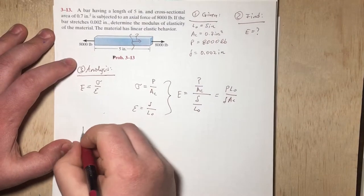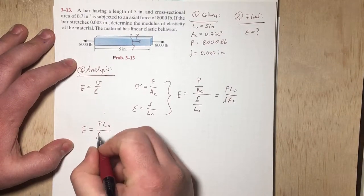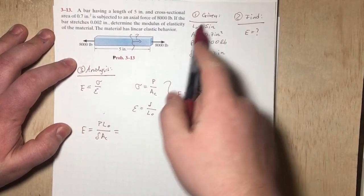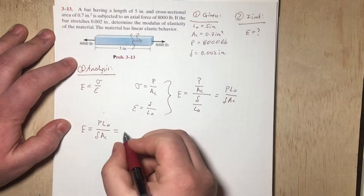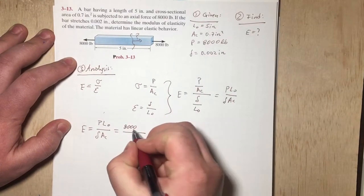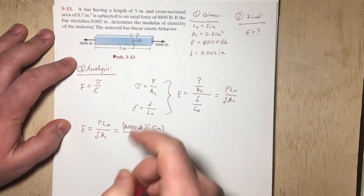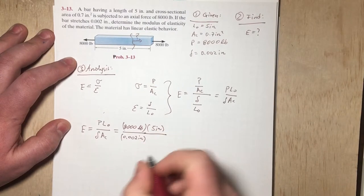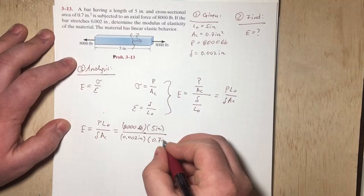So let's go ahead and rewrite that down here. We have P L0 over delta AC. And notice that we're given all this information, so all we have to do is plug it into the equation that we just came up with. So our axial force is 8,000 pounds. Our initial length is 5 inches. Our delta is 0.002 inches. And our cross-sectional area is 0.7 inches squared.